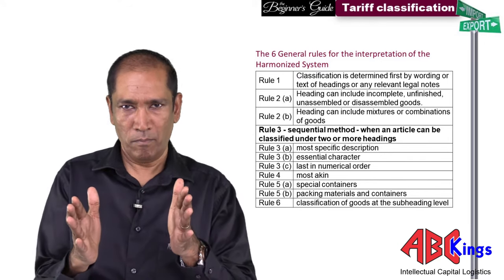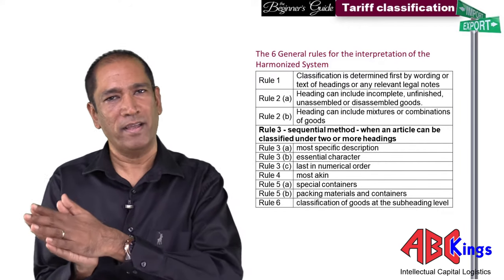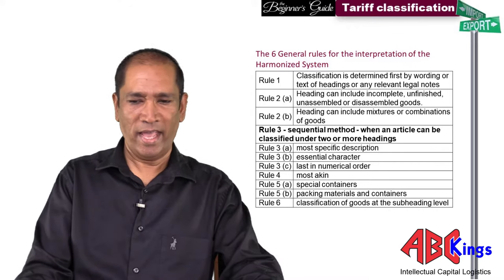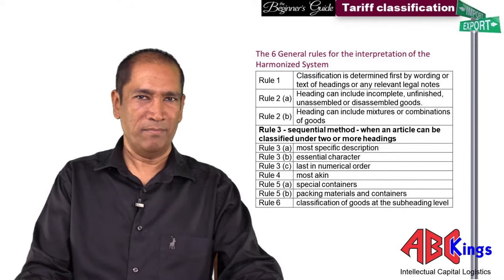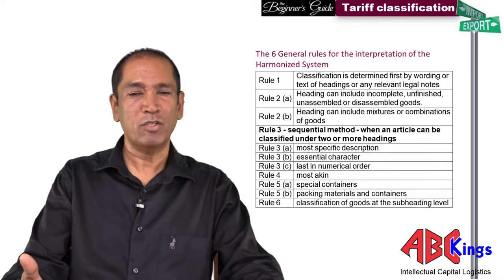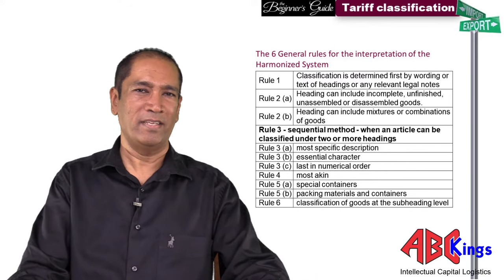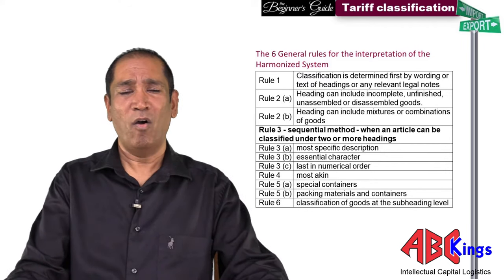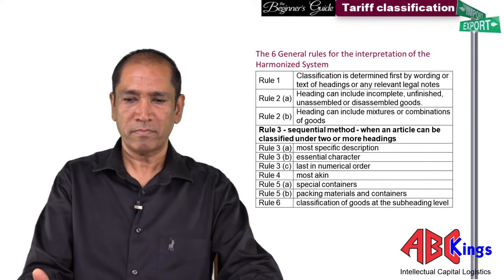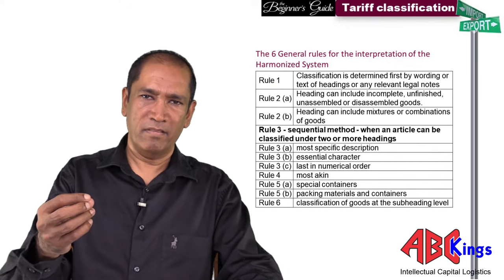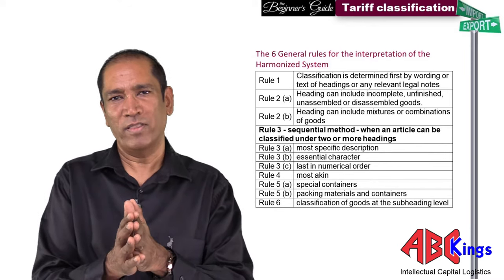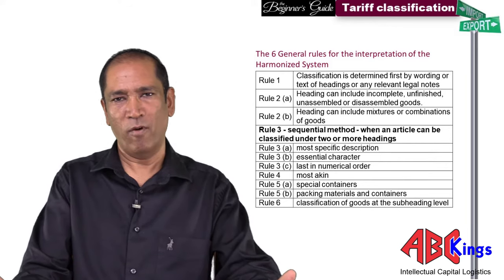Rule 3B addresses goods with an essential character. For example, a baby seat that comes with batteries for rocking at six speeds, attached toys, and a musical apparatus — is it a seat, toys, or a musical instrument? Rule 3B says you classify by the essential character of the goods. Since it is essentially a seat, the classification will be chapter 94, heading 94.1, which is a seat.